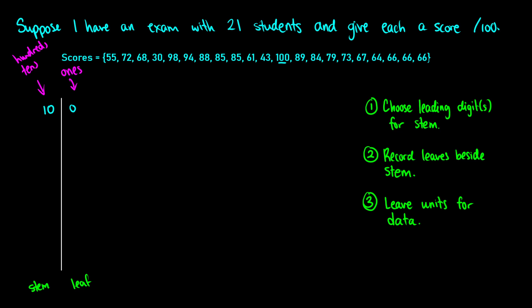So I can read this as: I have one person at 100. Now let's do the 90s. I put a 9 here as my stem — meaning 9 tens, which is 90 — and I fill everything in from smallest to largest. Scanning the data, I see 98 and 94. I put a 4 to the right, read as 94, and an 8 beside it. So I have one score of 94 and one score of 98.